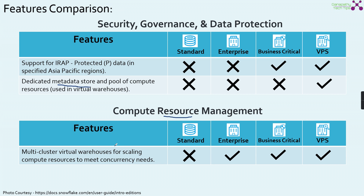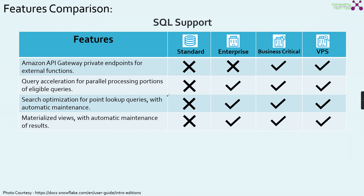Moving on to compute resource requirements — one feature is very important here. Multi-cluster virtual warehouses, which we already saw in the previous video, is all about scaling out with multiple virtual warehouses. Scaling is available only from the Enterprise version of Snowflake — if you are using Standard version, multi-cluster virtual warehouses is not available. Moving on to SQL support — Amazon API Gateway private endpoints for external functions is available only from the Business Critical version. Query acceleration for parallel processing portions of eligible queries is an Enterprise-only feature. Search optimization for point lookup queries with automated maintenance is again an Enterprise-only feature. Materialized views are also an Enterprise-only feature.